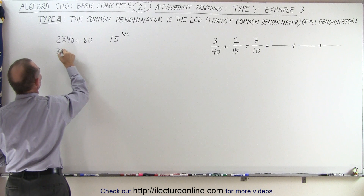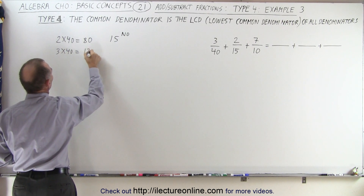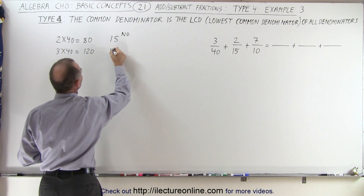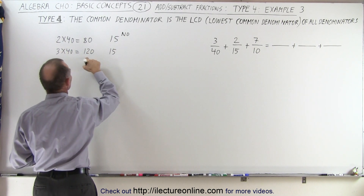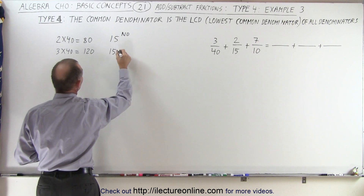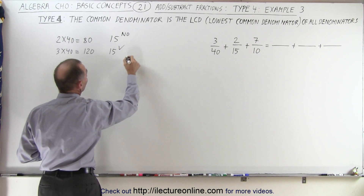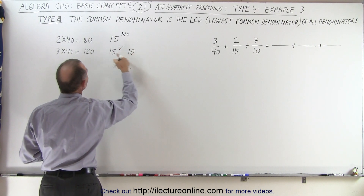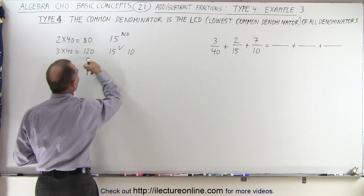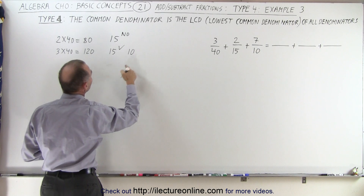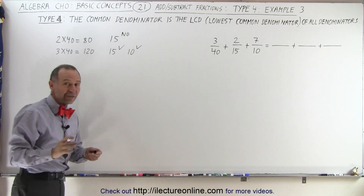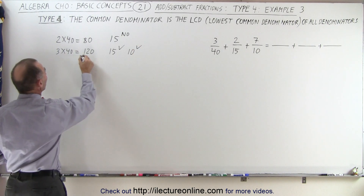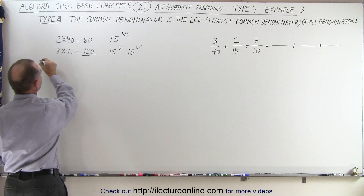3 times 40 is equal to 120. Does 15 fit evenly into 120? The answer is yes. Does 10 fit evenly into 120? The answer is yes as well. So now we've found our lowest common denominator: 120.